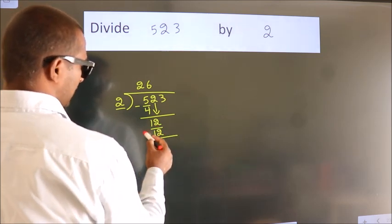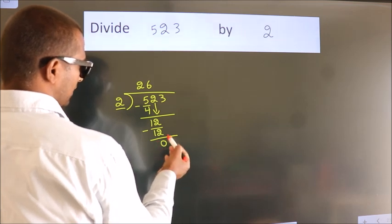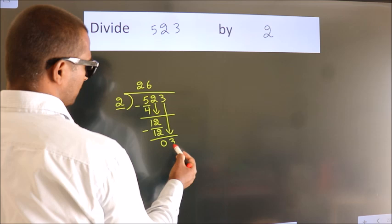Now, we subtract. We get 0. After this, bring down the beside number. So, 3 down. So, 3.